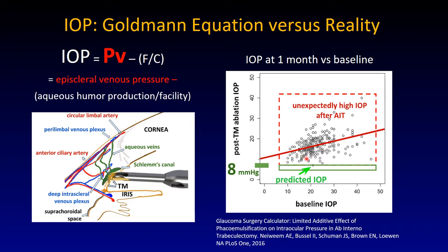On the x-axis you have baseline IOP, and on the y-axis the post-ablation IOP at one month — before glaucoma medications are started. Somebody with a pressure of 30 is more likely to have a significantly higher post-operative pressure than somebody who starts with a low pressure. This implies that the worse the glaucoma, the worse the downstream outflow resistance — located somewhere in a circled area we don't really know the substrate of.